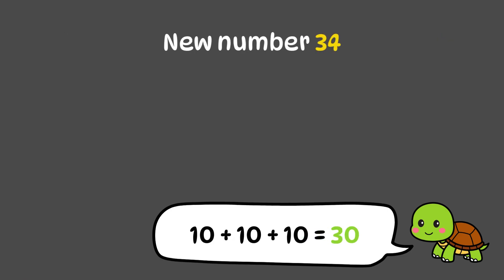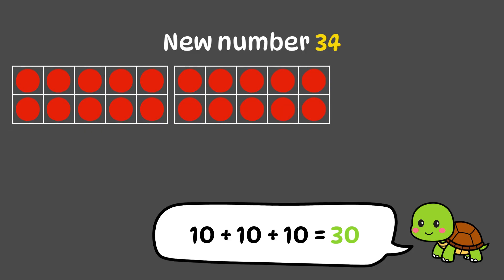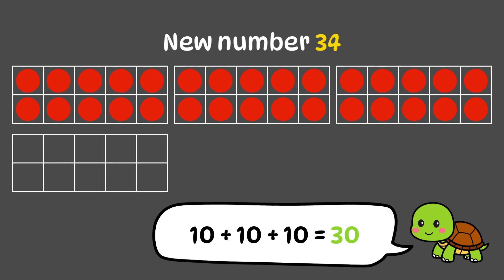Tillu is showing us number thirty-four, which means three tens and four ones. That would mean three full frames of tens and four more dots. That's thirty-four.